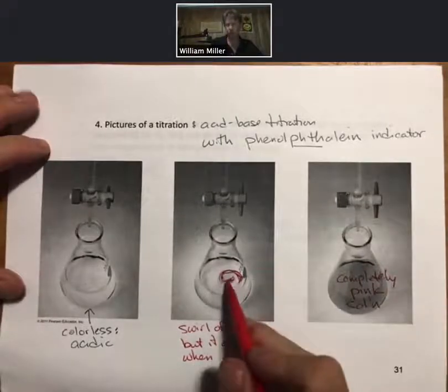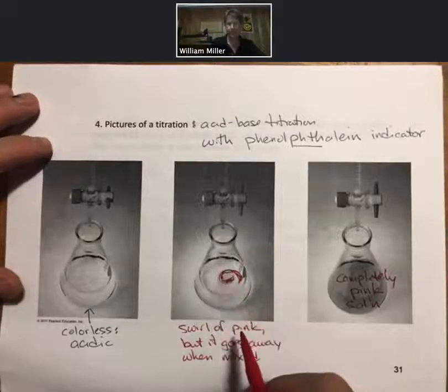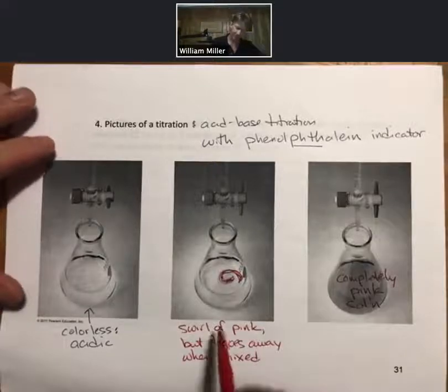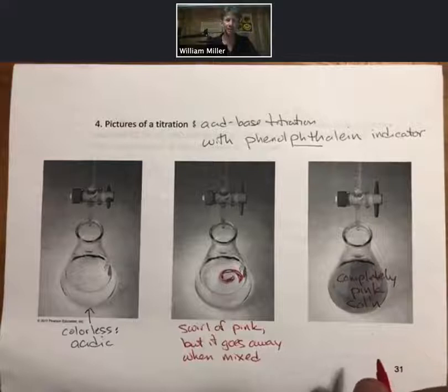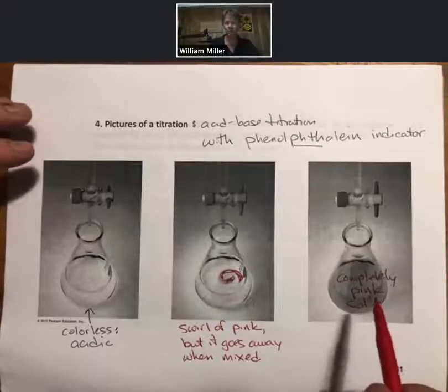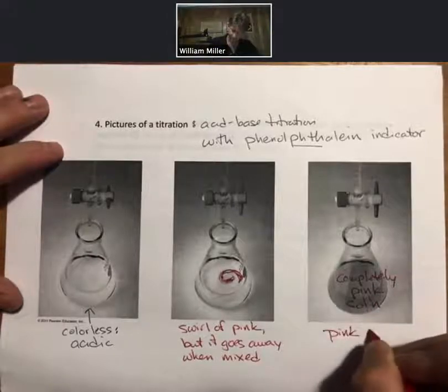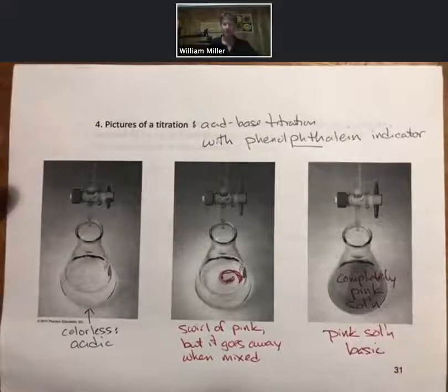Any swirl color that is a combination of colorless and pink is a transitory ephemeral state. So you just keep mixing it. And that's what we will do in the lab. Pink solution means basic.